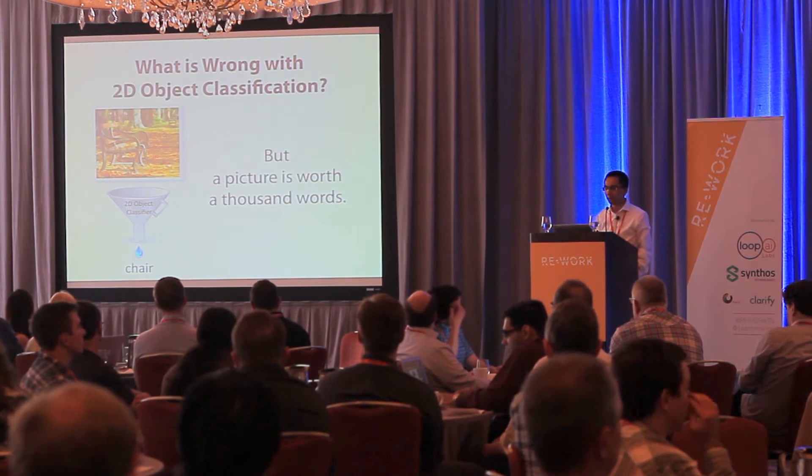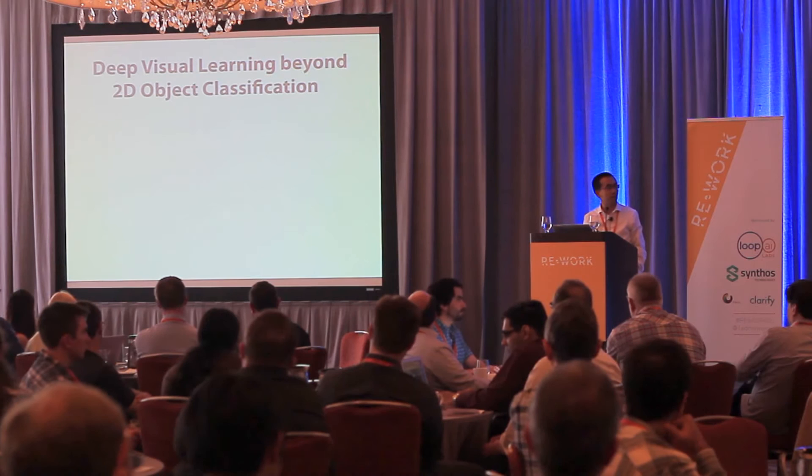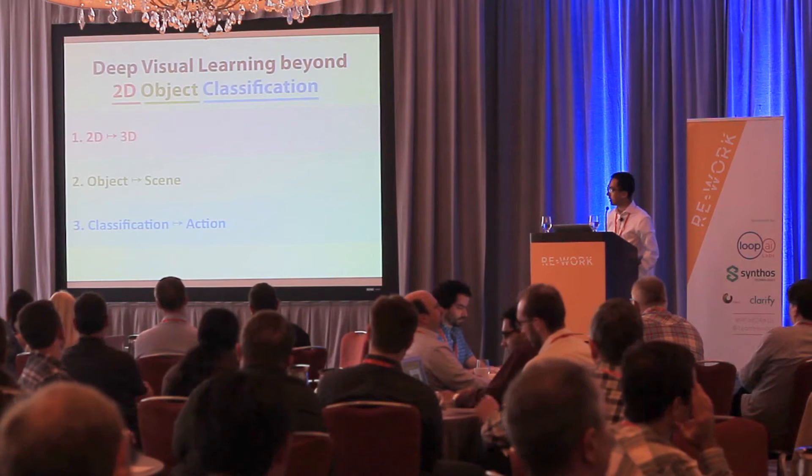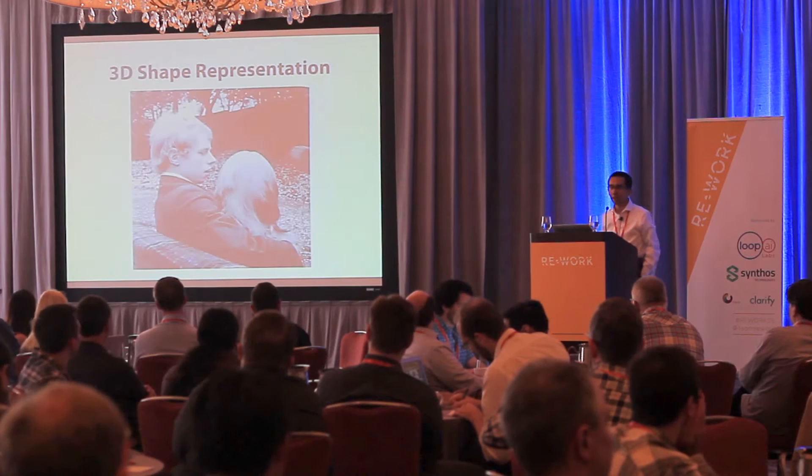There's something very wrong with 2D object classification. Today I'm going to talk about deep visual learning beyond 2D object classification — literally beyond that. My talk has three parts: how we move from 2D to 3D, how we move from object to scene, and how we move from classification to action.